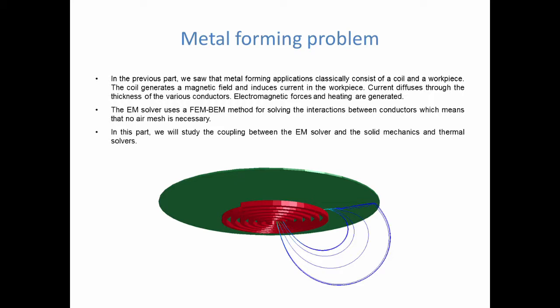In the previous part we saw that metal forming applications classically consist of a coil and a workpiece. The coil generates a magnetic field and induces current in the workpiece. Current then diffuses through the thickness of the various conductors. And then as a consequence we have electromagnetic forces and electromagnetic heating.